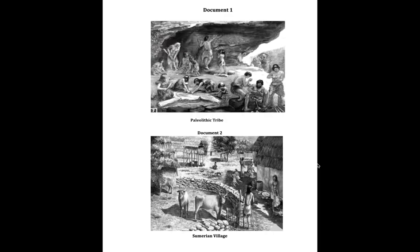Here's our first document. This is a Paleolithic tribe — we know it's Paleolithic because they're living in a cave. This man over here is making a cave painting, and these men over here are making tools of some kind. These women are working on an animal skin, probably preparing it to make a blanket or clothing. Here's a young child they're looking after. This is definitely a Paleolithic scene.